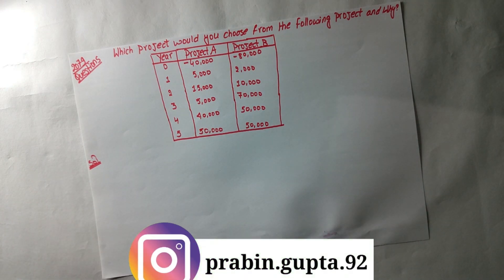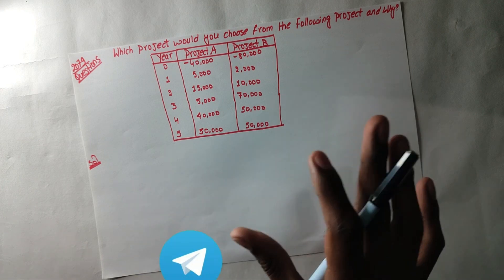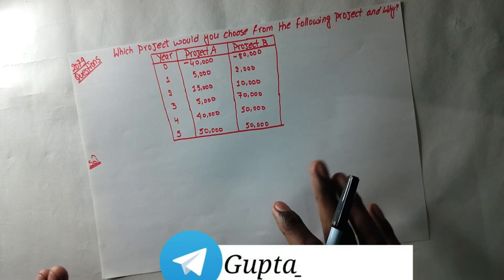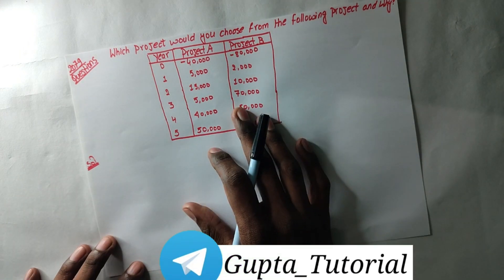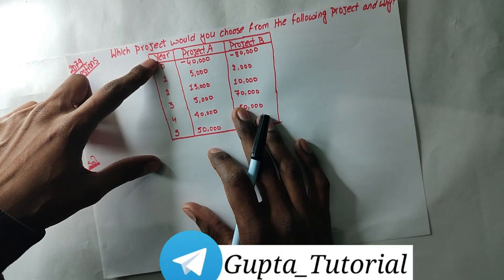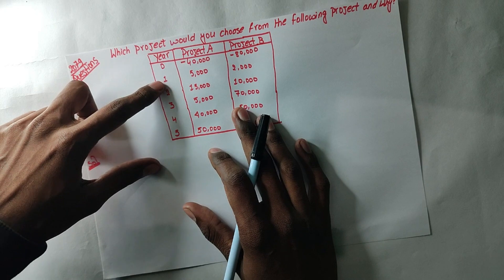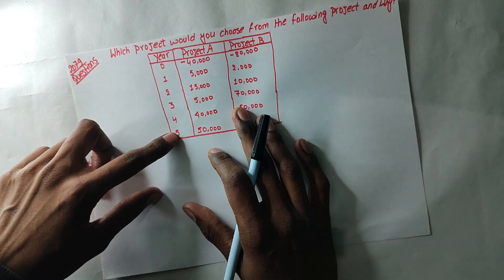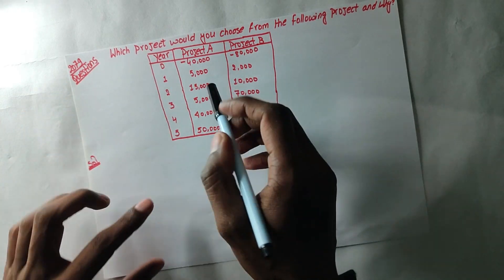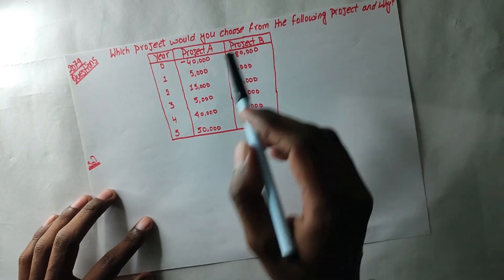You can see this video. Now we are going to talk about direct questions. Here you can see years 0, 1, 2, 3, 5. Project A, B, and D.